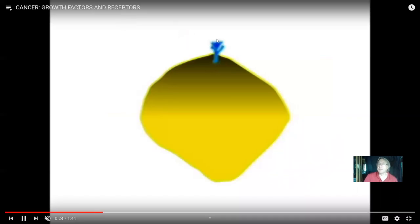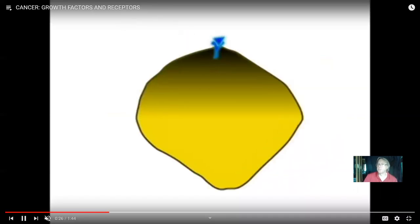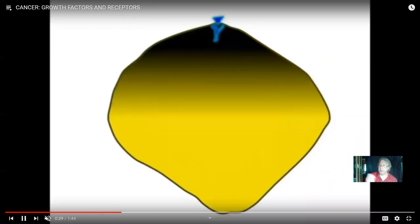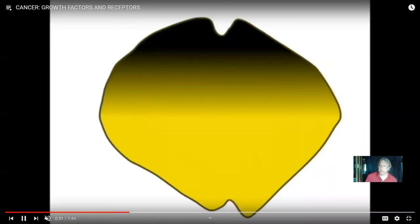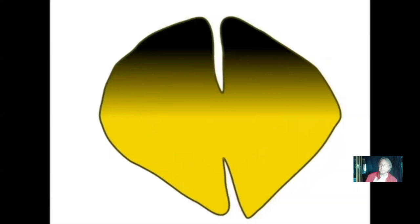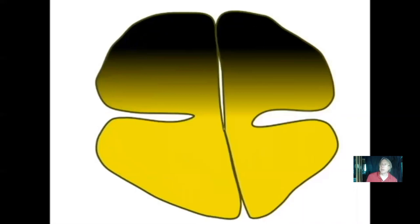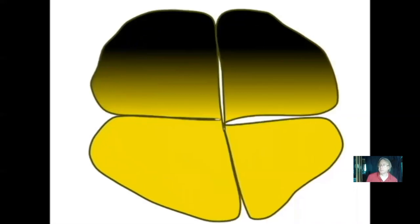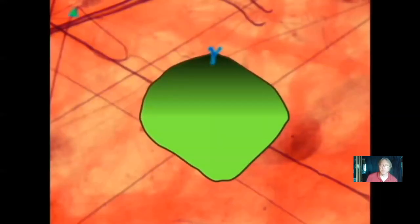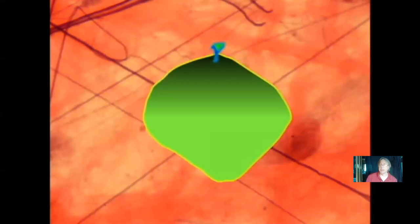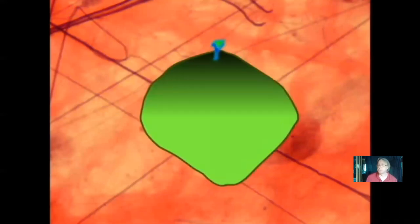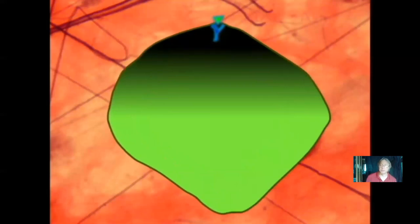Cells have to be told to divide. The growth factor is the signal, and the receptor perceives the signal and relays it to the interior of the cell. These are critical in telling cells to divide. Since there are occasions where we want to tell one cell to divide in the body but not others, there are different growth factors: epidermal growth factor for epidermal cells, nerve growth factor, fibroblast growth factor, etc., and different receptors for all of these.